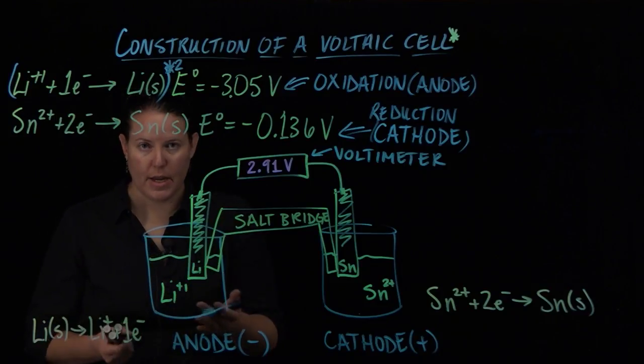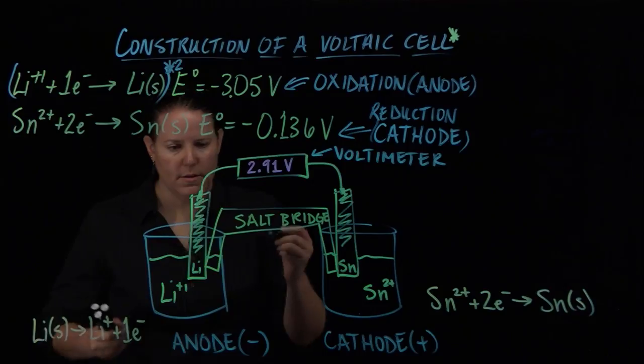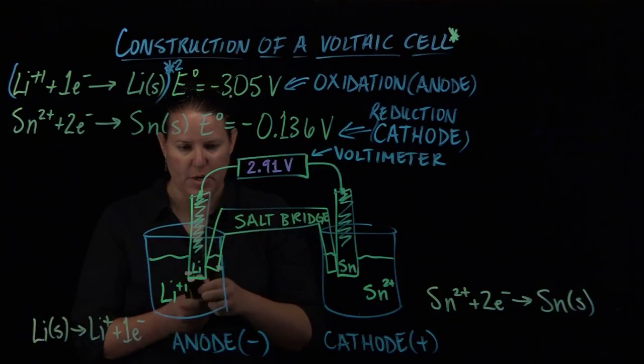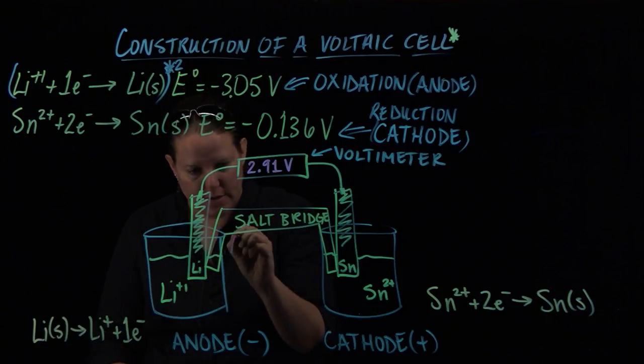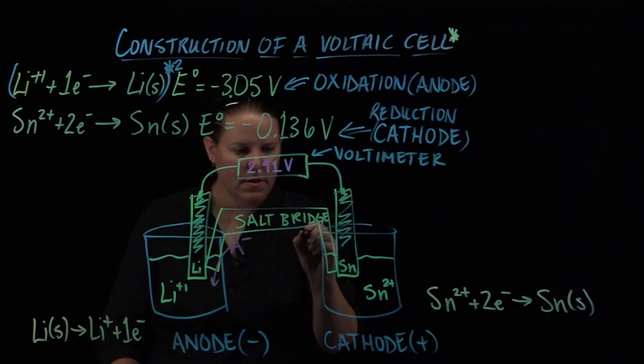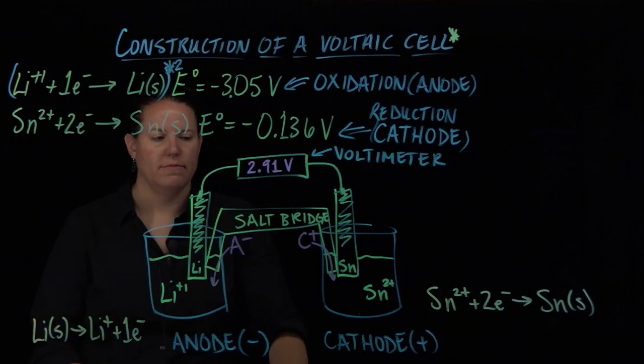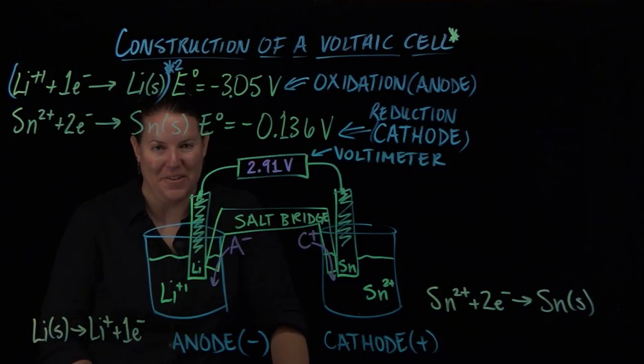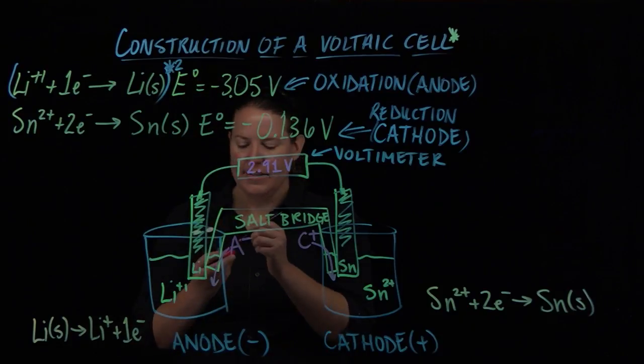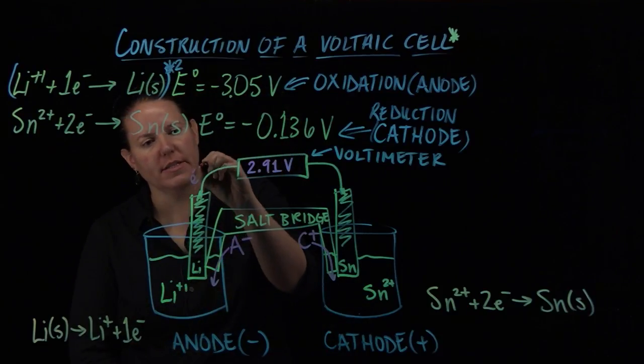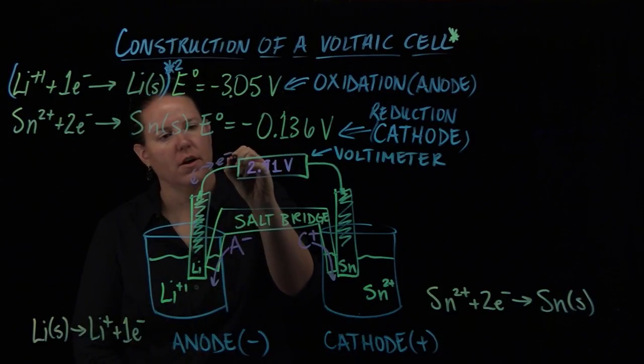The salt bridge is always the same. A salt is composed of a cation and an anion, so the anode works out so well - the anion goes towards the anode and the cation goes towards the cathode. Isn't that cool? Doesn't matter what the salt is, that always happens.